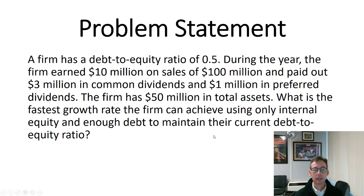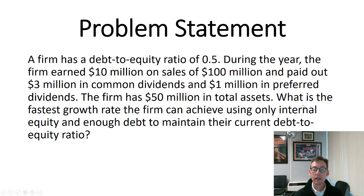Now let's take a look at the problem statement. Let's talk about how to read any finance problem — always start with the question: what is the fastest growth rate the firm can achieve using only internal equity and enough debt to maintain the current debt-to-equity ratio? That's really asking for the sustainable growth rate. We want you to know the definition rather than just naming it. Moving back up, the firm has a debt-to-equity ratio of 0.5 — and as we discussed, if we add one to that we get the equity multiplier. During the year the firm earned 10 million, which is net income, on sales of 100 million.